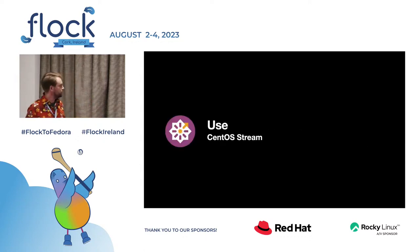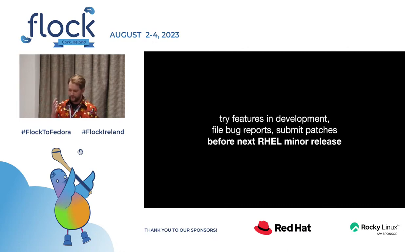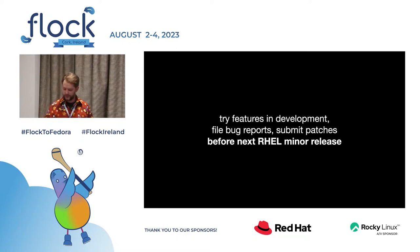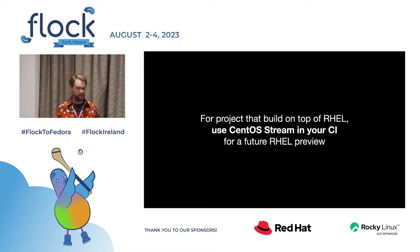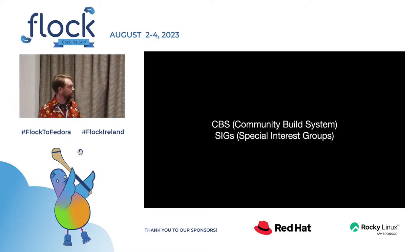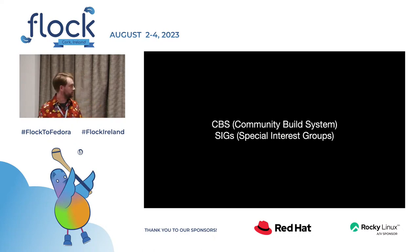Now, using CentOS Stream: try features in development, submit bug reports and patches before they go to RHEL — that's what it's meant for, as a preview of the next minor RHEL version. If you build on top of RHEL, you can use CentOS Stream as CI to make sure your bits will work on RHEL in the future. You can also use it in the community build system alongside SIGs, and if something breaks you can submit a bug or merge request and get it fixed — something you couldn't do with CentOS Linux before.